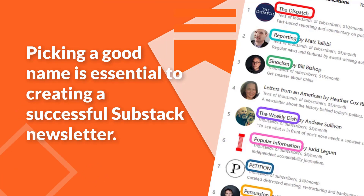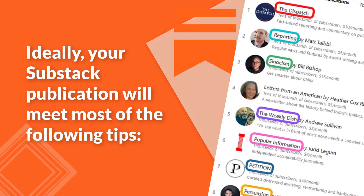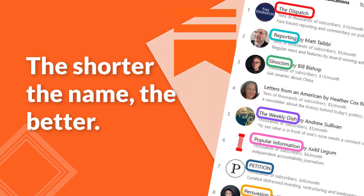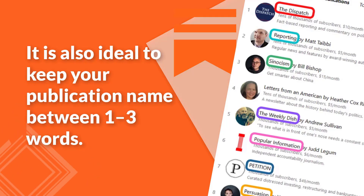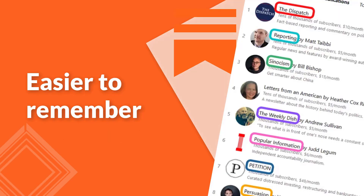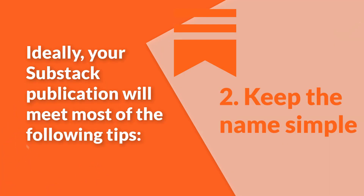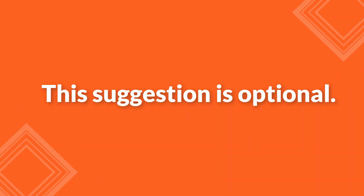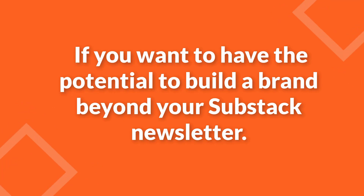Number 1: Name. Picking a good name is essential to creating a successful Substack newsletter. Ideally, your Substack publication will meet most of the following tips. First, keep the name short — generally, the shorter the name, the better, ideally between 1 to 3 words. Second, keep the name simple so it will be easy for your audience to remember. Third, try to pick a name with an available domain name — this is optional but helpful if you want to build a brand beyond your Substack newsletter.